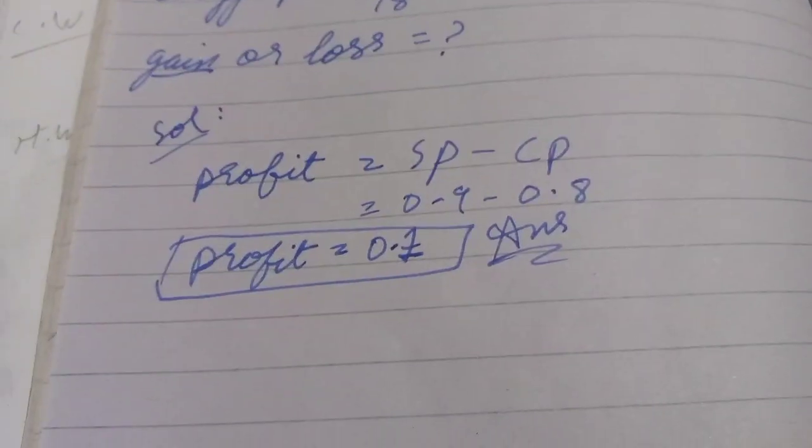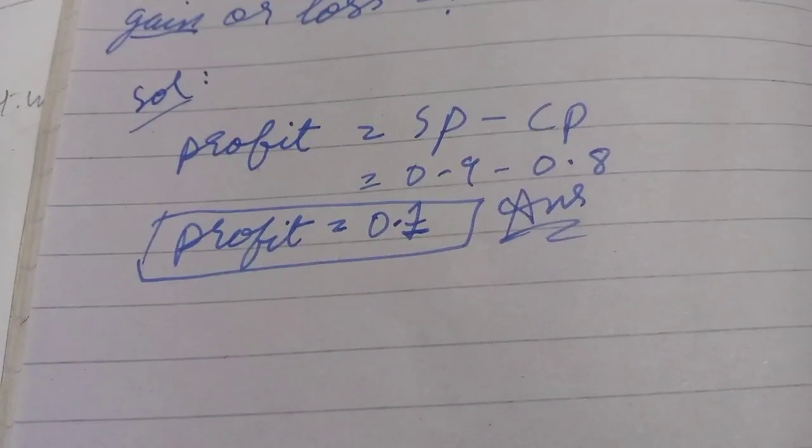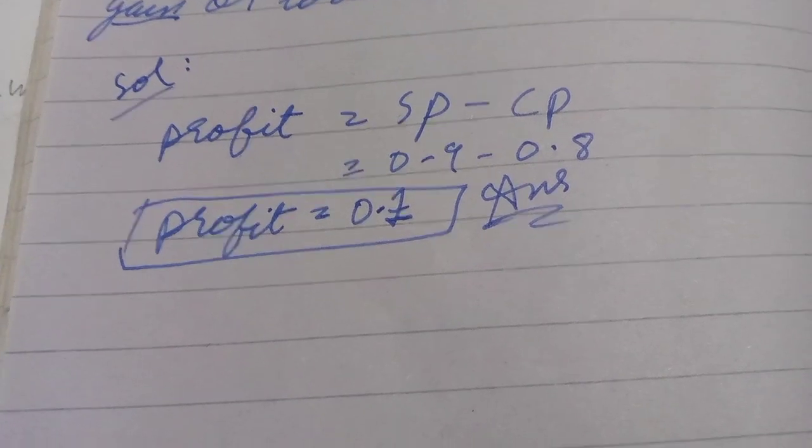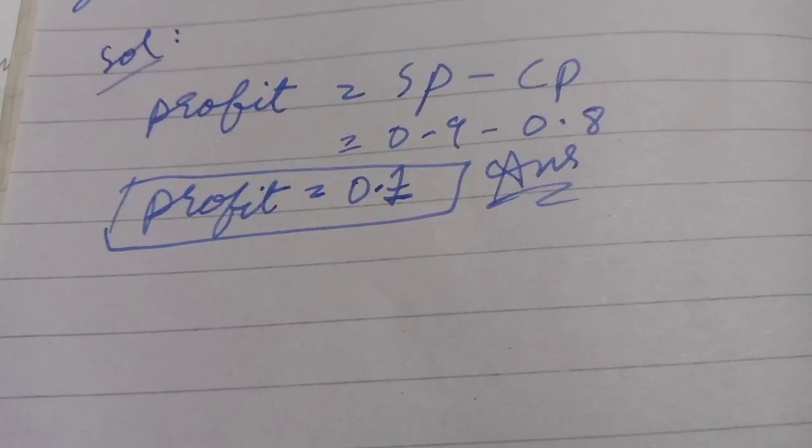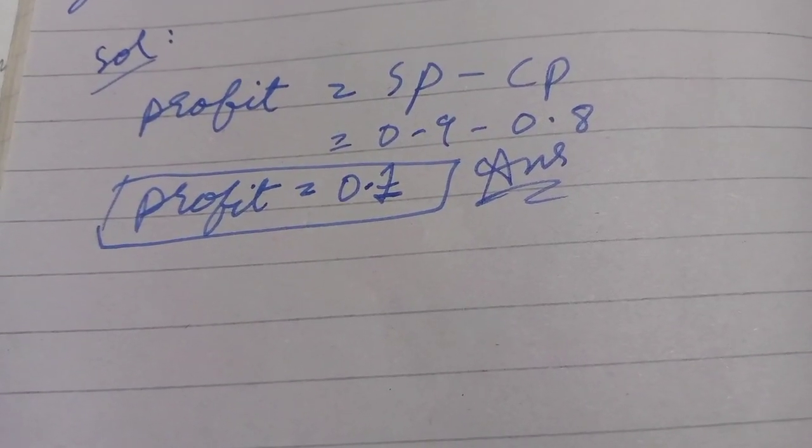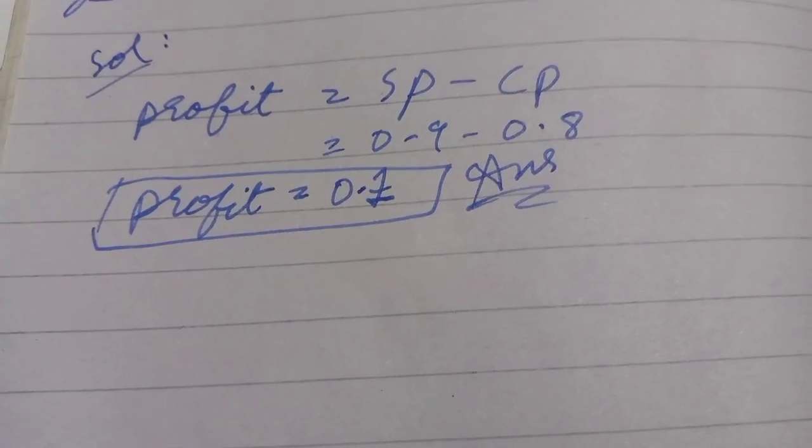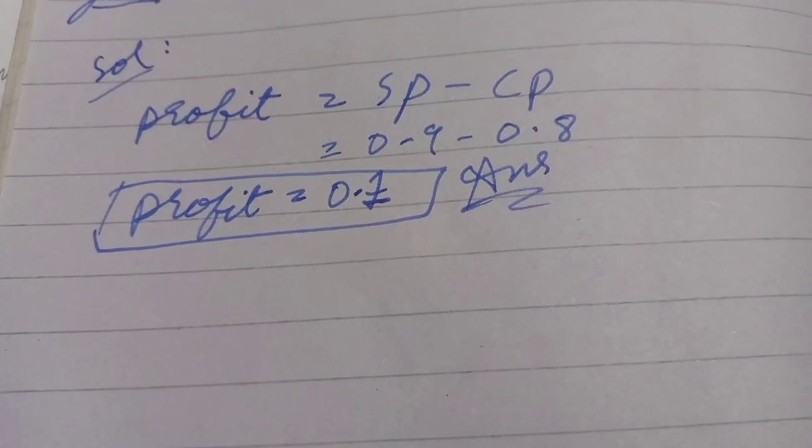Now we will do the solution. The data shows this is a gain, so we will use the gain formula. The formula is profit equals SP minus CP. SP is 0.9 and CP is 0.8, so the answer is 0.1. 0.1 is the profit.